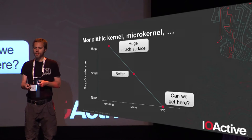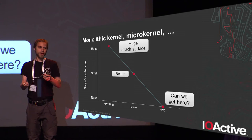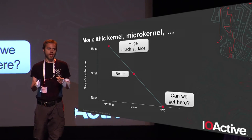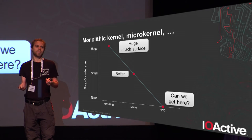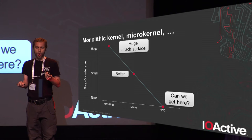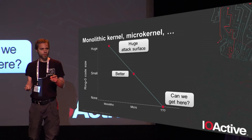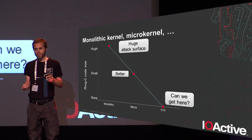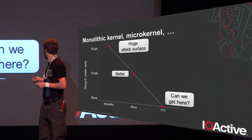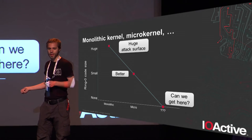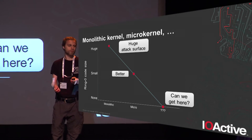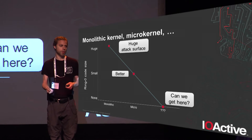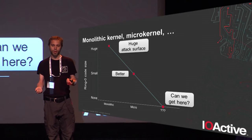Microkernels are a good idea. They certainly improve the state of the art beyond monolithic kernels. But the problem is they still have software running in ring zero. So the question is, can we get down there? Is it possible to have an operating system that does not have any software running in ring zero and still provides all the services we expect from a modern operating system?